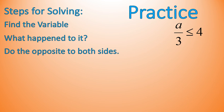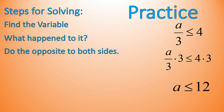Now it's time for some practice. This is our inequality: a divided by 3 is less than or equal to 4. Pause the video and try that one out. Is this the first step that you did — multiplying both sides times 3? My variable is a; a was divided by 3. So I'm going to multiply both sides times 3 and get that a is less than or equal to 12. If those are the steps you followed, you should have gotten that answer.